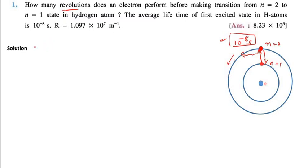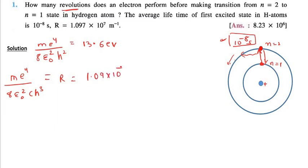Before I start I would just like to give you few short tricks like m e raise to 4 upon 8 epsilon 0 square multiply this by h and c. This is called Rydberg's constant and this is equal to 1.09 into 10 raise to plus 7 meter inverse.